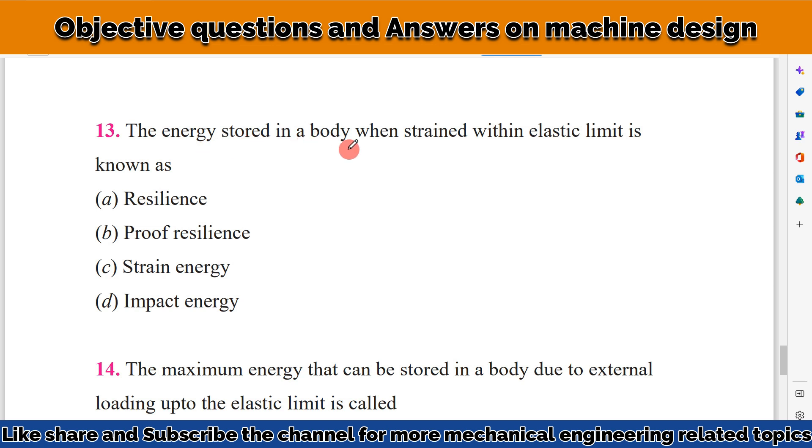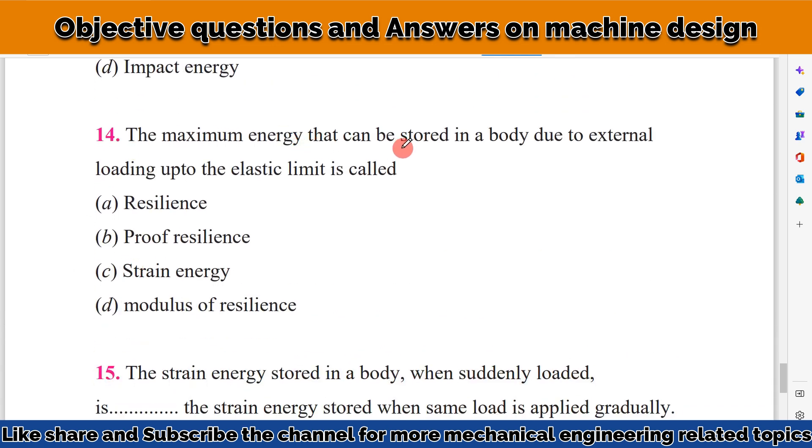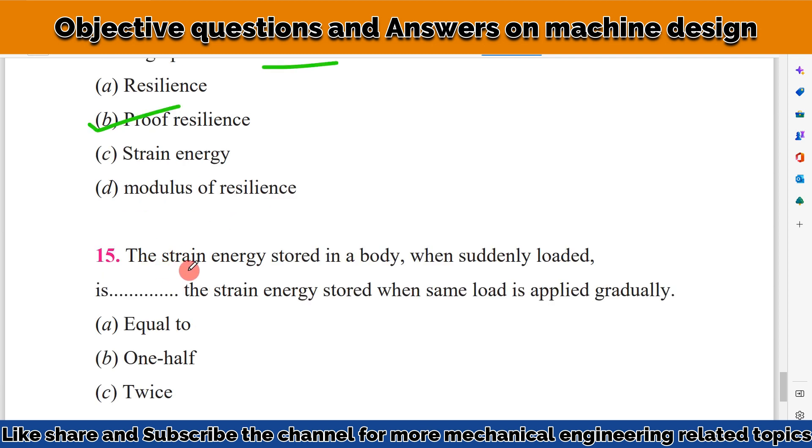The energy stored in the body when strain is within the elastic limit is known as strain energy. The maximum energy that can be stored in a body due to external loading up to the elastic limit is known as proof resilience.